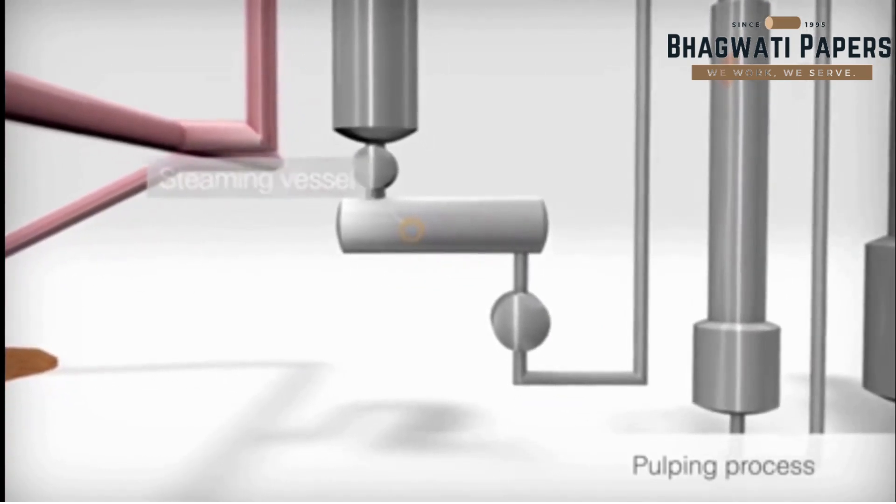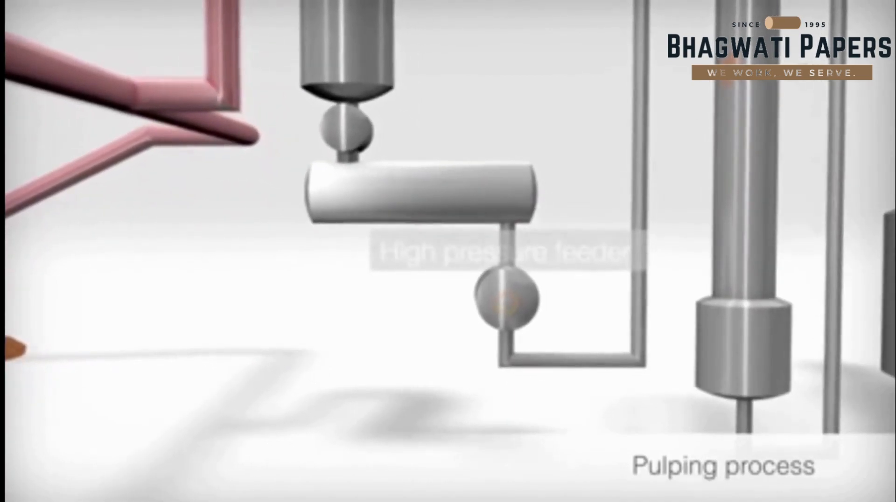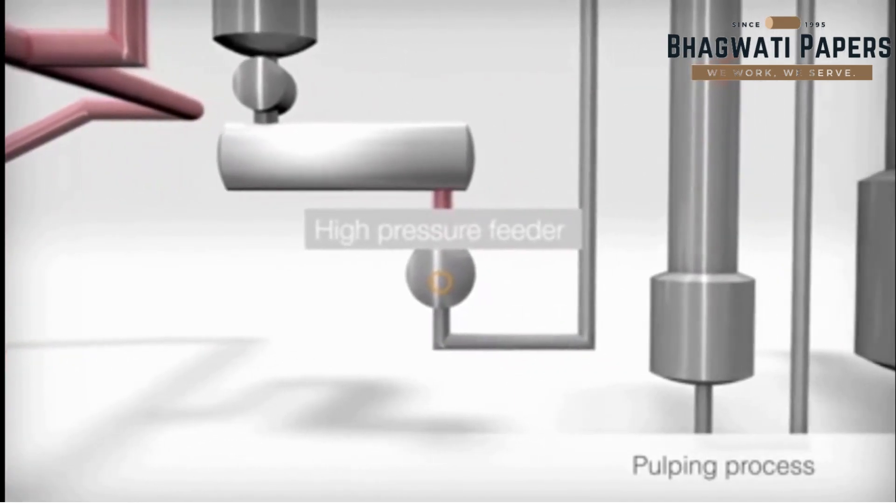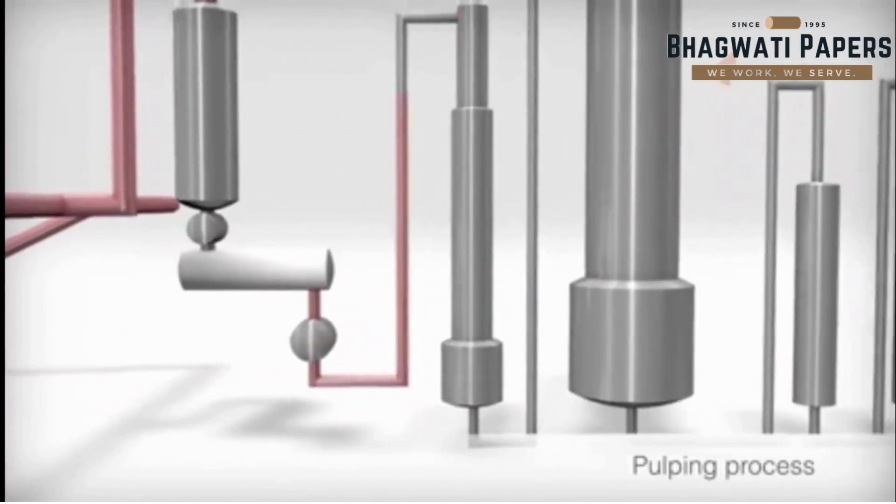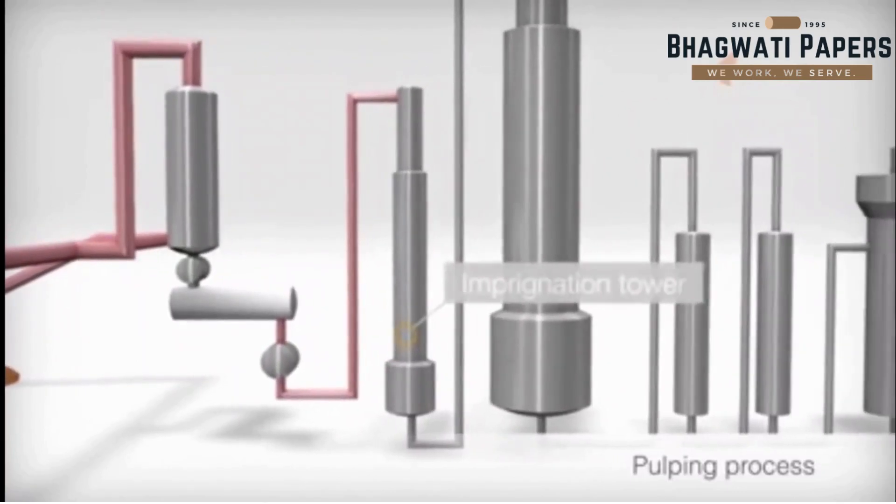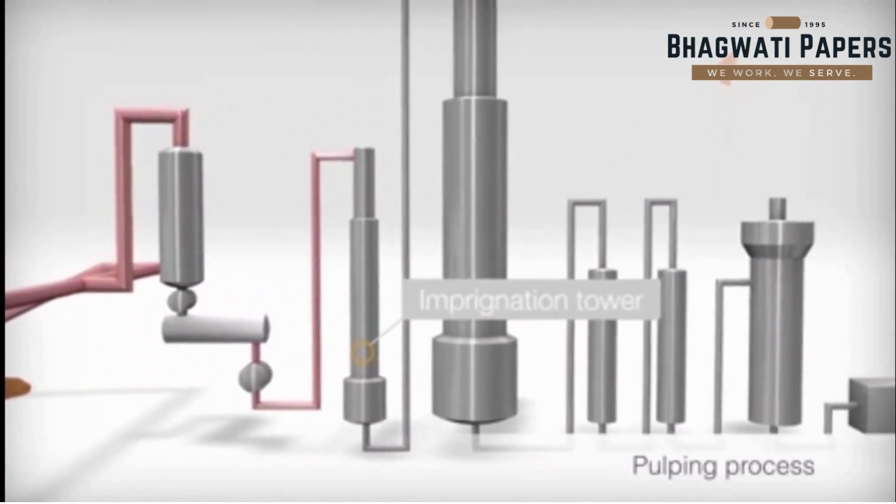Upon leaving the steaming vessel, the chips enter the high pressure part of the pulping process. In this stage, pressure of up to 14 bars is used in the impregnation tower to fully penetrate the chips with cooking liquor.